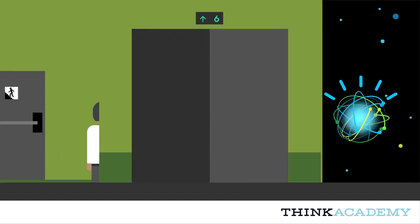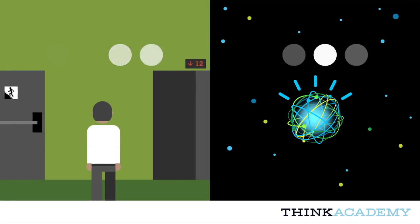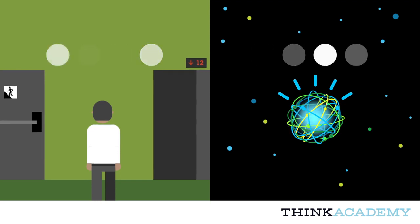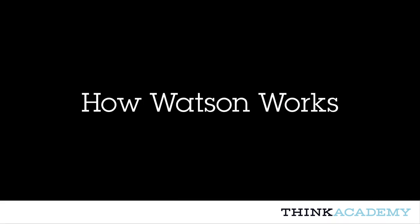Just as humans become experts by going through the process of observation, evaluation, and decision making, cognitive systems like Watson use similar processes to reason about the information they read. Watson can also do this at massive speed and scale. So how does Watson do it?